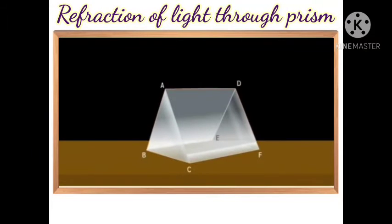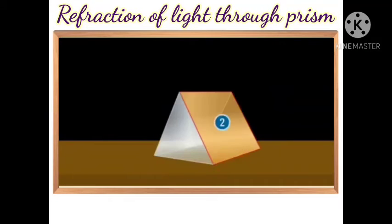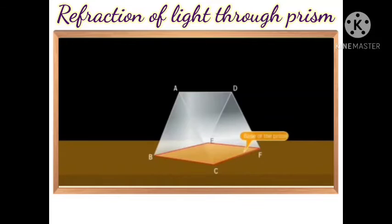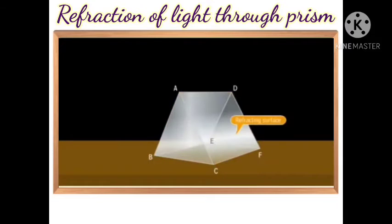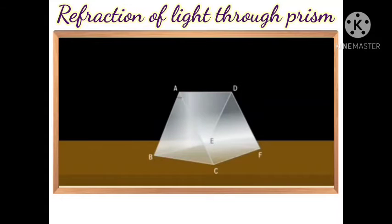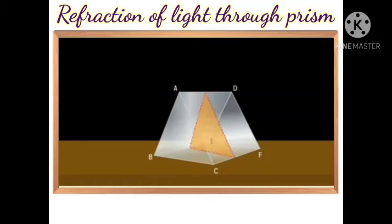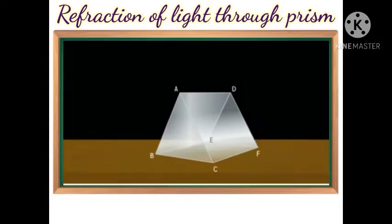Now we will discuss refraction of light through a prism. A prism is a transparent medium bounded by five plane surfaces with a triangular cross-section. The two opposite surfaces are identical and parallel triangles, while the other three surfaces are rectangular and inclined to each other. Let us look at a prism ABC.